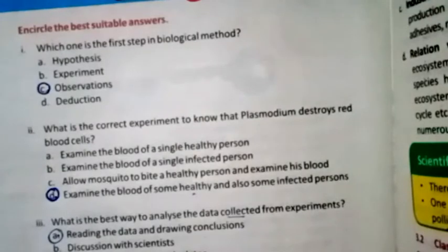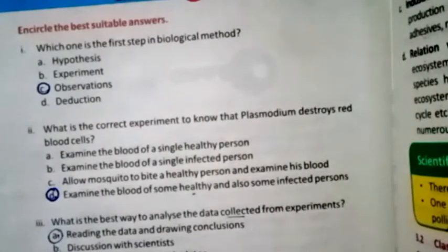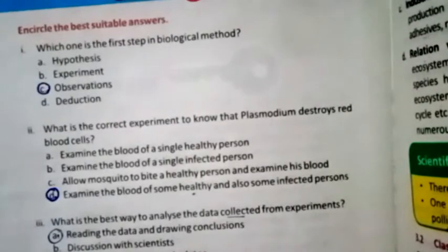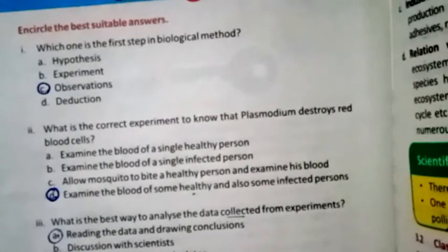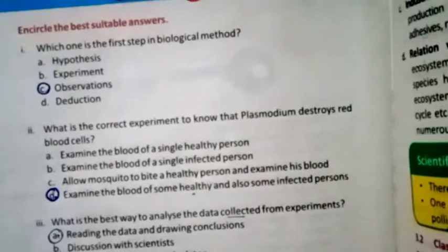Question two: What is the correct experiment to know if Plasmodium destroys red blood cells? The right option is D — examine the blood of some healthy and some infected persons.